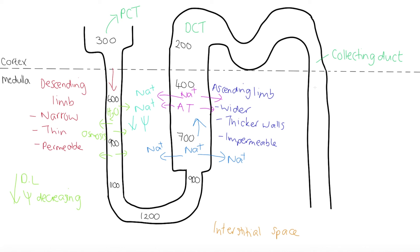The filtrate then moves into the distal convoluted tubule where water will be reabsorbed, and then into the collecting duct where the majority of the water will be reabsorbed. Any water not reabsorbed will continue through the collecting duct and be transported to the bladder.